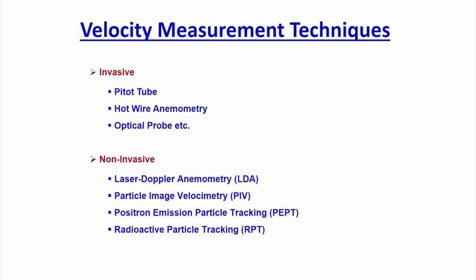Any velocity measurement technique is divided into two types: invasive and non-invasive. Invasive, as the name suggests, means you are intruding something inside the flow. For example, if there is a pipeline where gas and liquid are both flowing and you want to measure velocity, you intrude a probe inside — that technique is called the intrusive measurement technique.